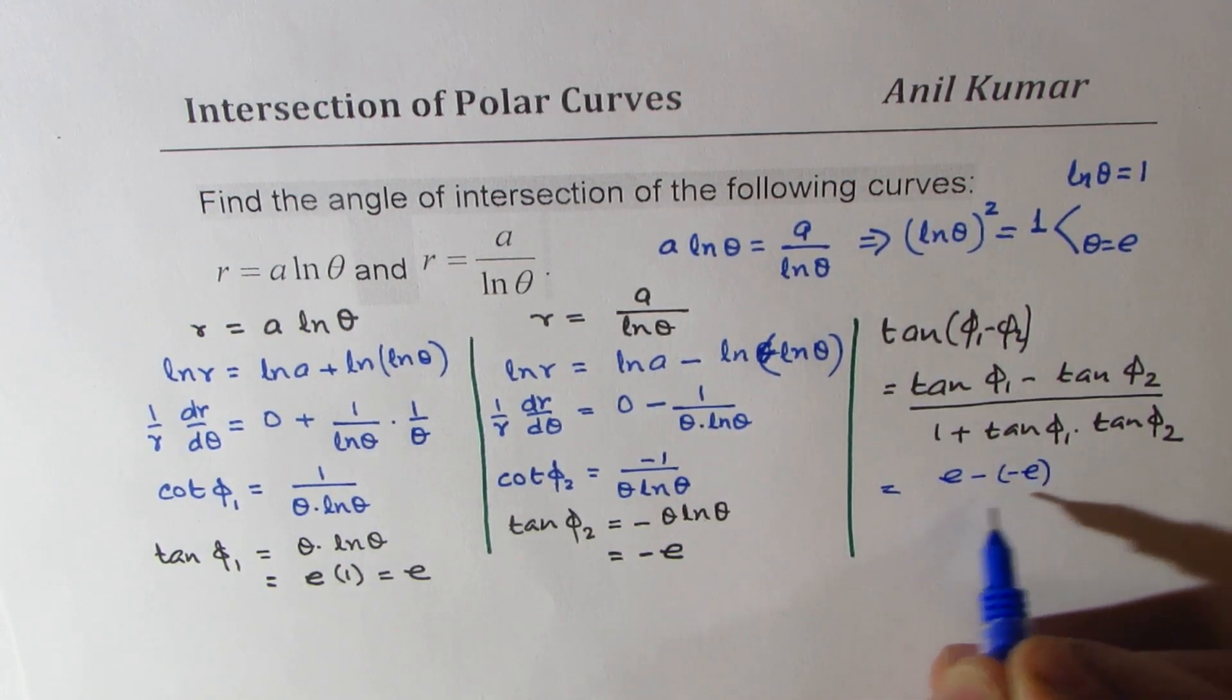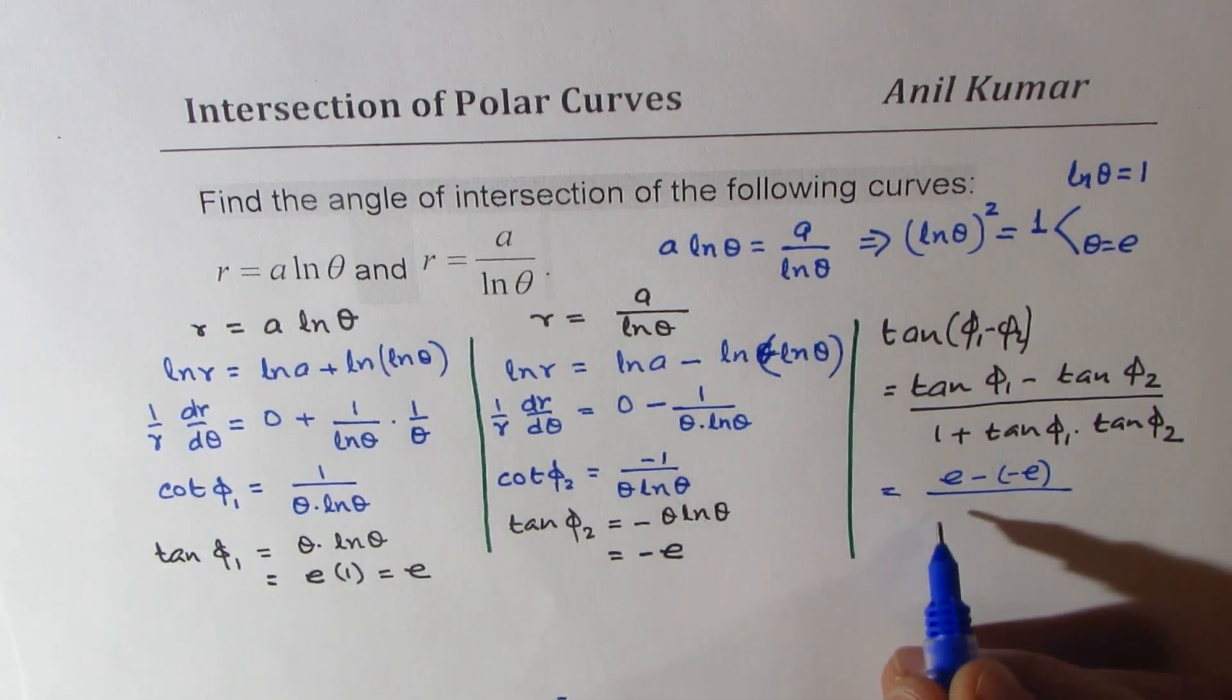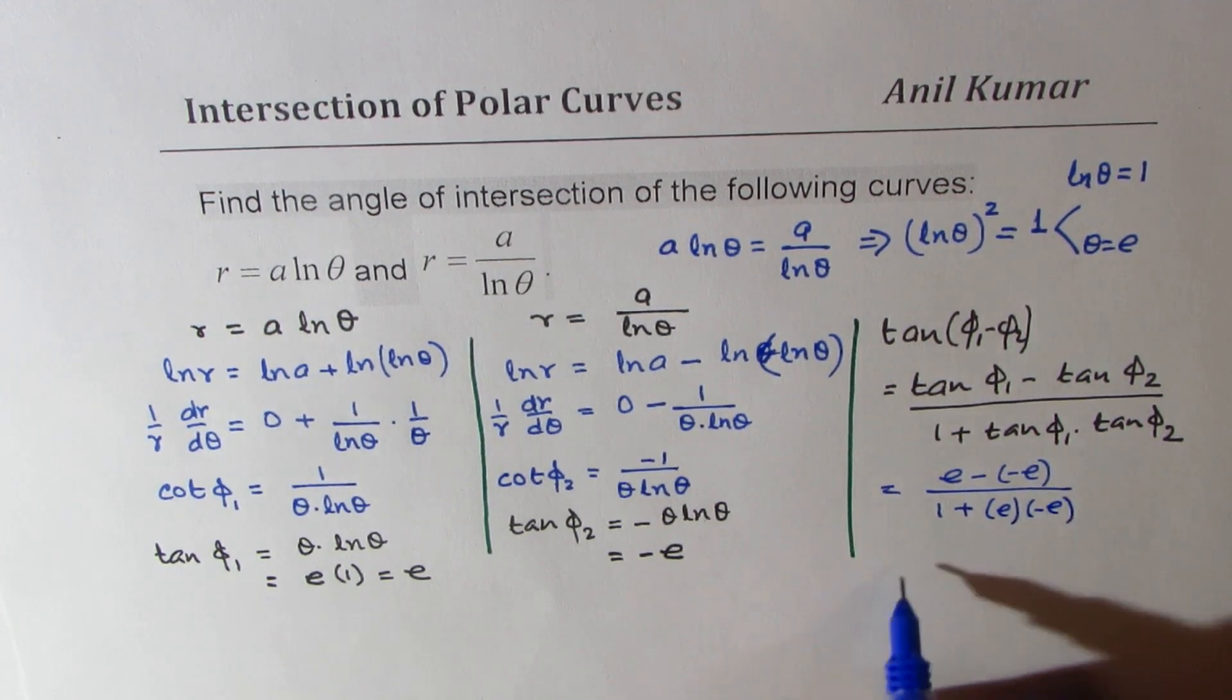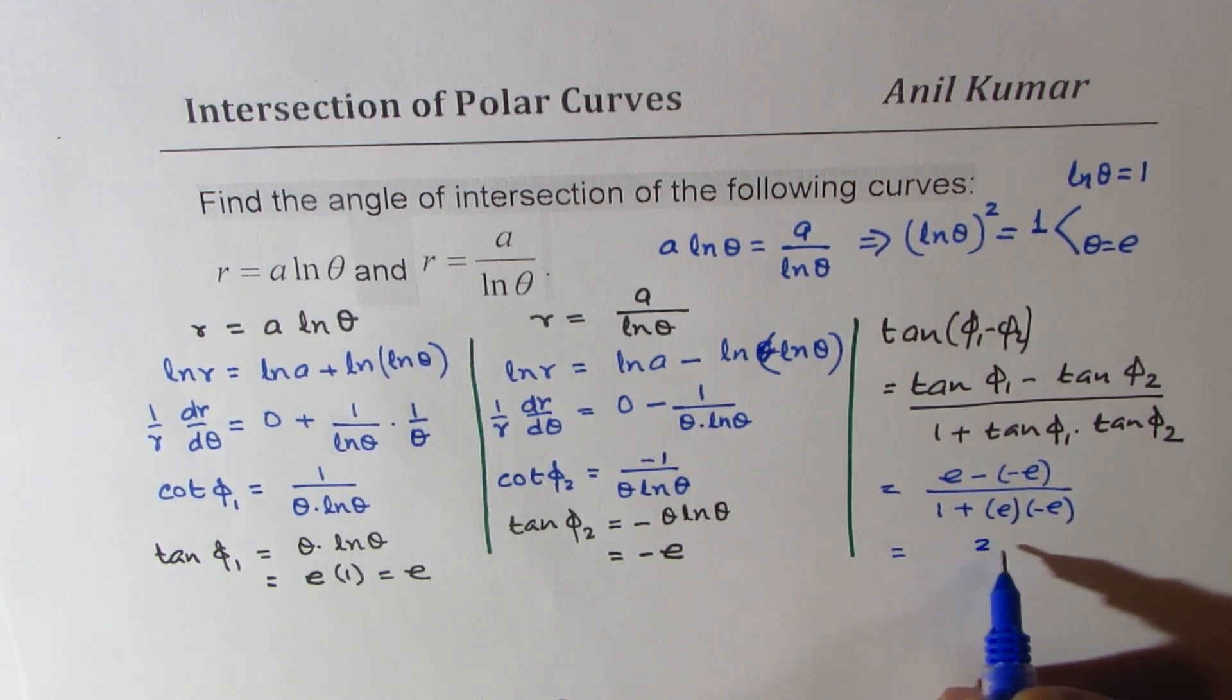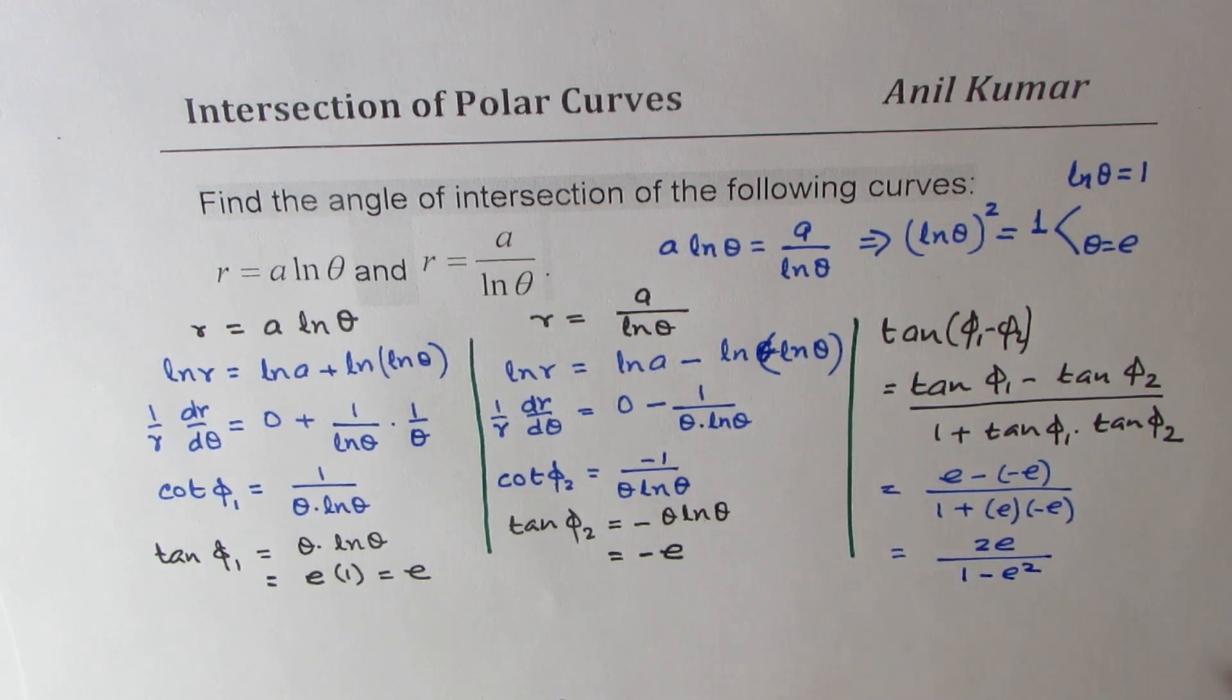e minus minus e over, we get the denominator as 1 plus e times minus e. So that gives you 2e over 1 minus e squared.